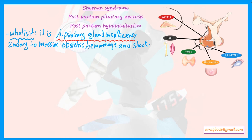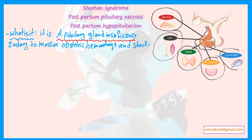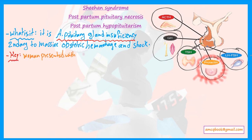The anterior pituitary secretes the following hormones: ACTH, which is responsible for stress hormone secretion; growth hormone; TSH; prolactin; and finally LH and FSH. The key clinical keyword is a woman presenting with failure of lactation plus a history of hemorrhage during labor.